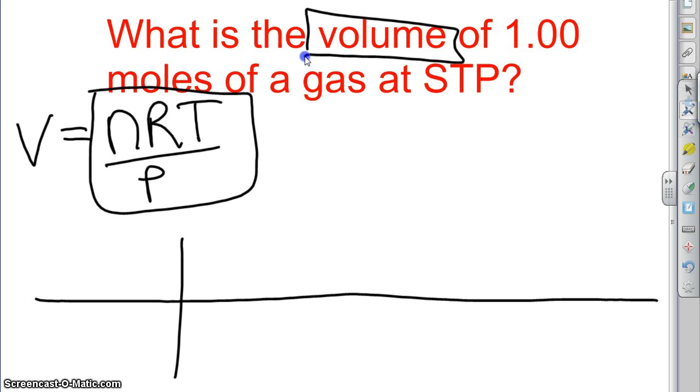So we're going to make a little conversion chart here to make sure that everything cancels out. And anytime that we see something in the top on the formula up here, we're going to put it in the top down here. And if it's on the bottom, it's going to go in the bottom. So the first thing I see is N. N stands for moles.